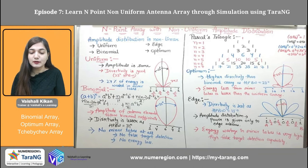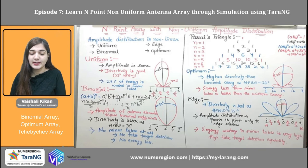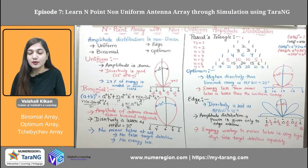But there is a problem: 24% of the energy is getting wasted in the minor lobes. So now we are moving towards the binomial array. We know the binomial expansion of (a+b)^n: it would be a^n·b^0 + (n/1!) a^(n-1)·b^1 + (n(n-1)/2!) a^(n-2)·b^2, and so on up to a^0·b^n. The amplitude of the antenna elements follows the binomial coefficient. I had taken 1, 4, 6, 4, 1 amplitude. You can see the directivity is less — it is 31 degrees. Directivity is lesser compared to the uniform antenna array. But there is one advantage: there is no minor lobe, so energy is not getting wasted in minor lobes and no false target detection would occur.